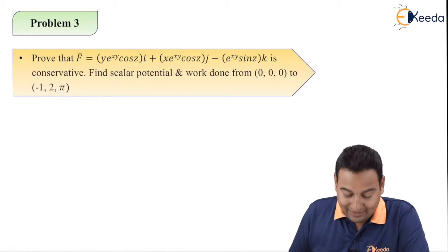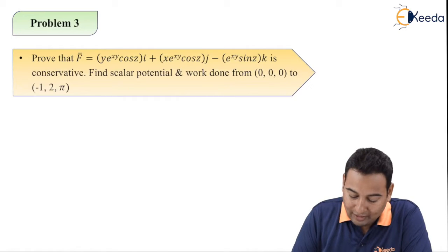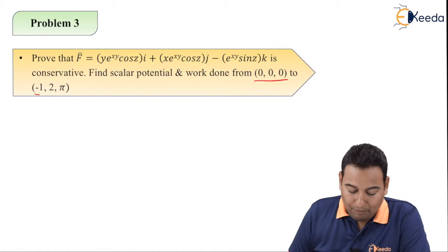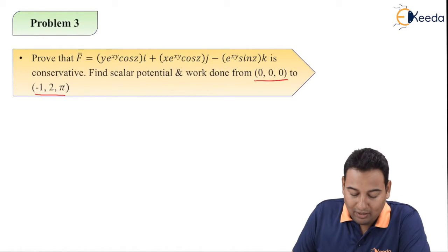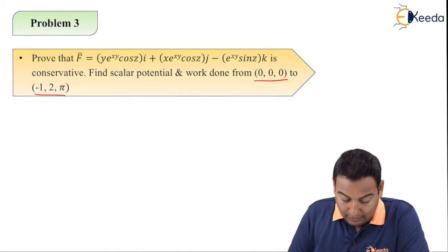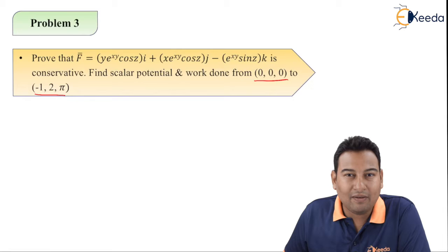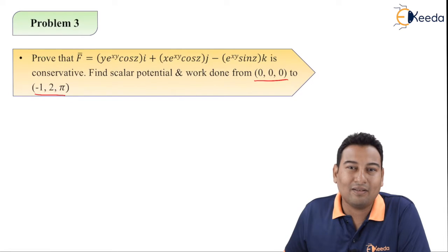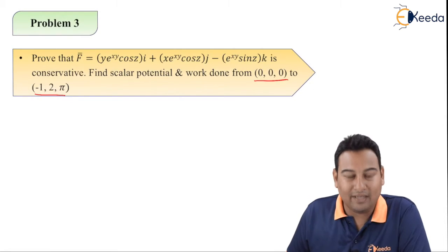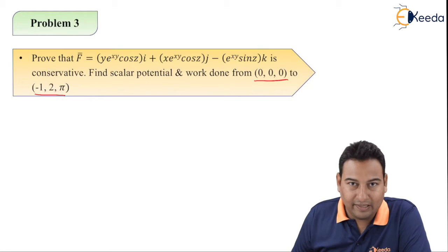Here F-bar is given, and the question asks for conservative field, scalar potential, and work done. The points are from (0,0,0) to (-1, 2, π). If you are not comfortable with the derivative you may find some difficulty, because here the u·v rule is applicable.